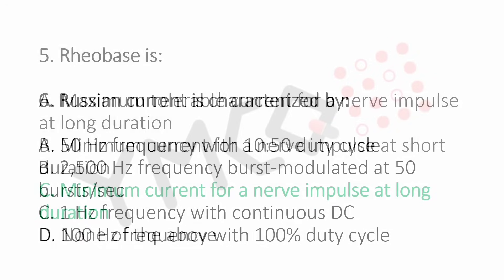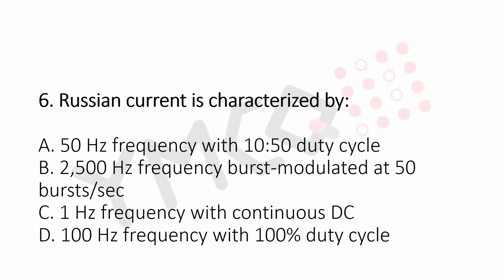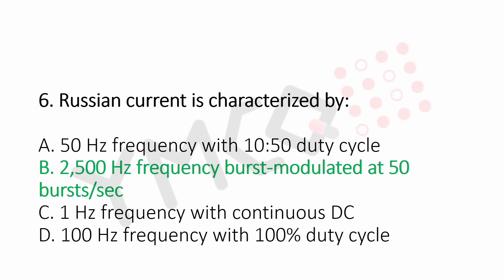Question 6: Russian current is characterized by — Option A: 50 Hz frequency with 10:50 duty cycle, Option B: 2500 Hz frequency burst modulated at 50 bursts per second, Option C: 1 Hz frequency with continuous DC, Option D: 100 Hz frequency with 100% duty cycle. The answer is Option B: 2500 Hz frequency burst modulated at 50 bursts per second.